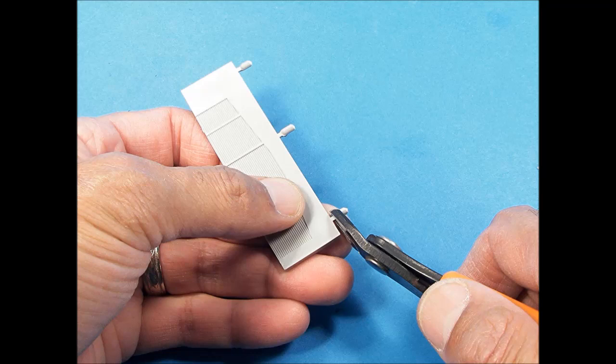The attachment points on this part are thick, so it's best to cut the part free from the tree first. Snippers won't work due to the thickness of the plastic, so trim as much of the stub off leaving a little bit on the part. The remaining stub can then be sliced off with the number 11 exacto blade.